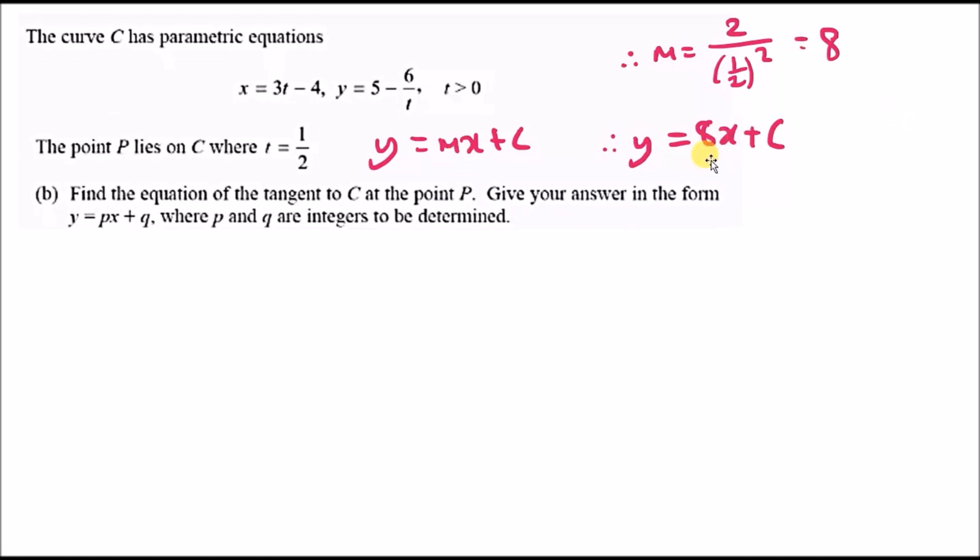Now our equation is y equals 8x plus c. We just need to find the x and y coordinate to get c. Since we know the point P lies on C where t is half, we can plug in the value for t and get x and y coordinates. So x equals 3 times half, so 3 over 2 minus 4, and y equals 5 minus 6 over half, so 12.